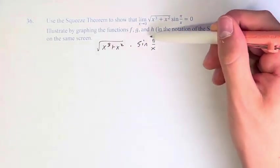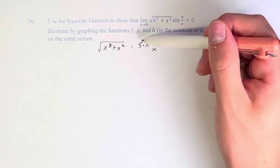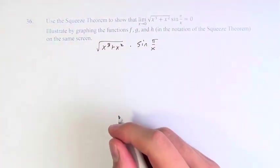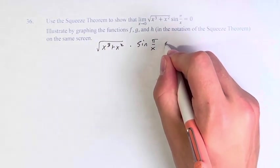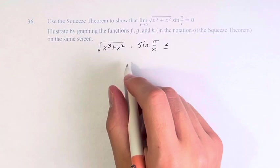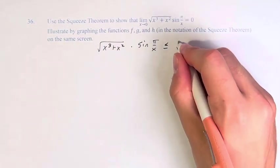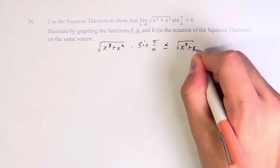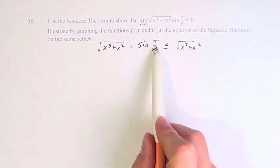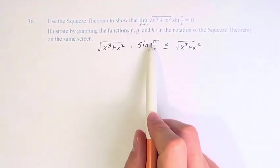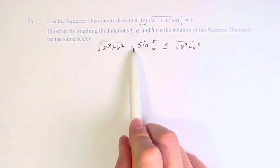We know that the greatest value this will have is 1 and the lowest value is negative 1. So we know that this function will be less than or equal to, for all values of x, the square root of x cubed plus x squared. Either sine of something is equal to 1 and they're equal, or any other value of sine is going to be less than.